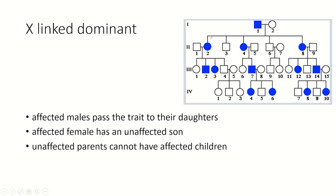The affected mom can have an unaffected son, because the affected mom can carry the normal X allele and pass it to her son, making the son normal. And unaffected parents cannot have affected children, because they carry the dominant disease allele.